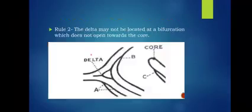Rule 2: the delta may not be located at a bifurcation which does not open towards the core. In this figure, we can see the location of the core and three bifurcations. According to the rule, the bifurcation that is closest and opens toward the core is the location of the delta.